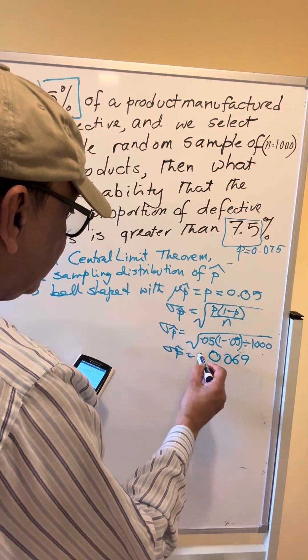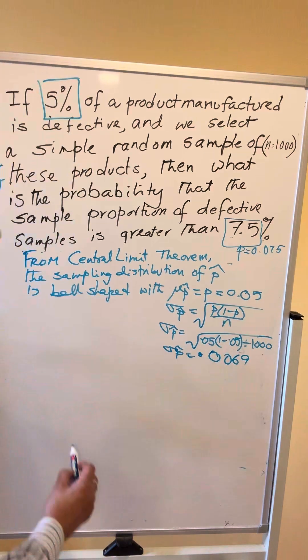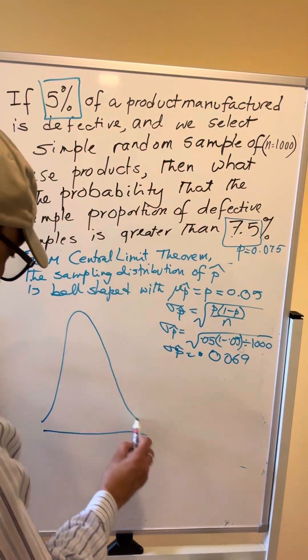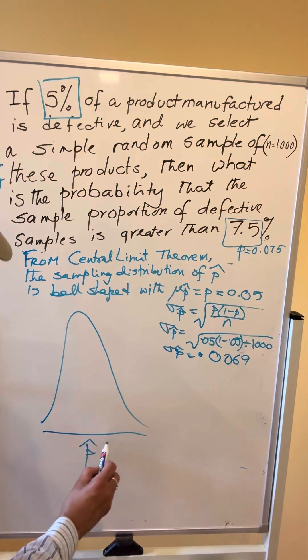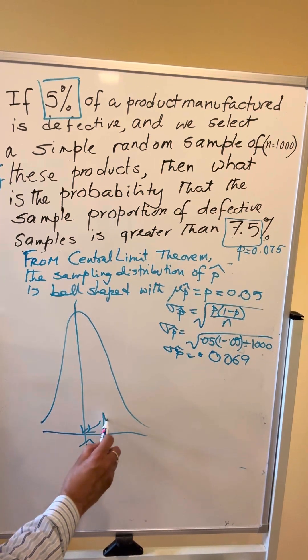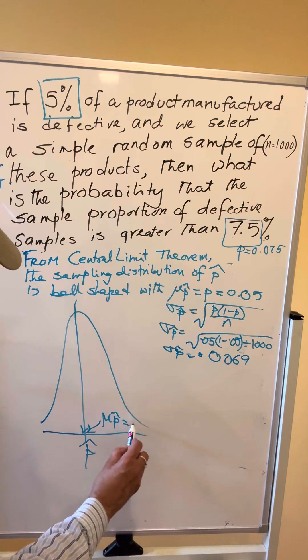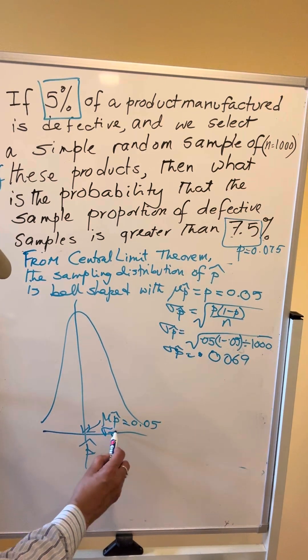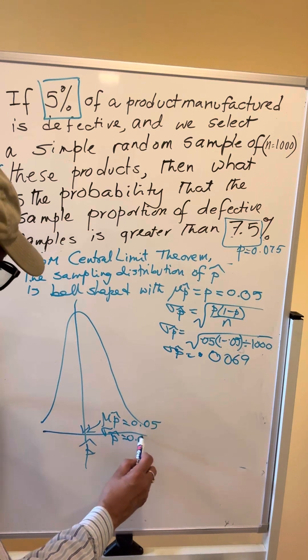0.0069. So the bell-shaped distribution is like this. This is the sampling distribution of P-hat. The center where the peak is the highest, Mu P-hat is equal to 0.05, and sigma P-hat is equal to 0.0069.